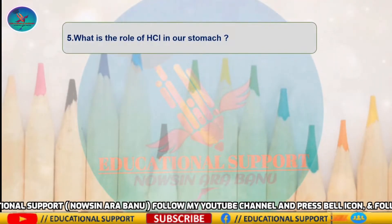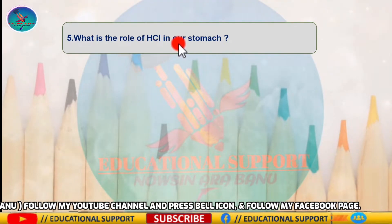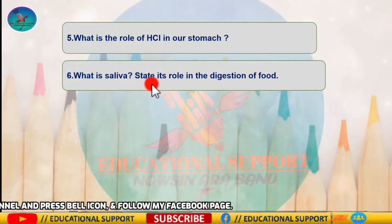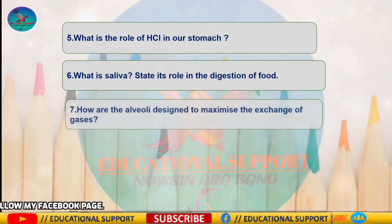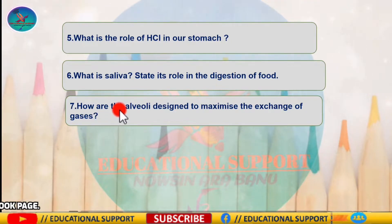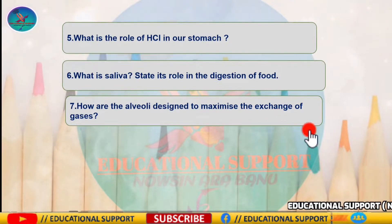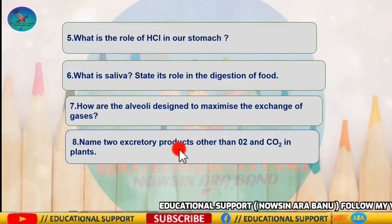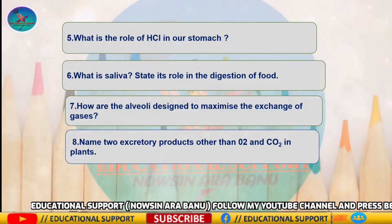Question five: what is the role of HCl in our stomach? Question six: what is saliva and state its role in digestion of food? Question seven: how are the alveoli designed to maximize the exchange of gases? Question eight: name two excretory products other than oxygen and carbon dioxide in plants.